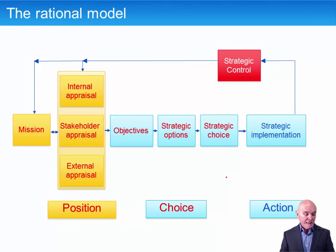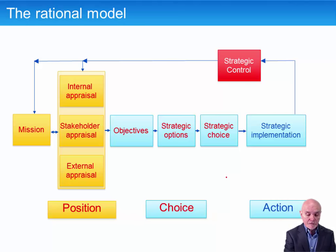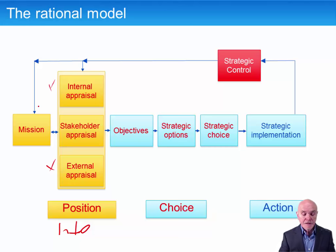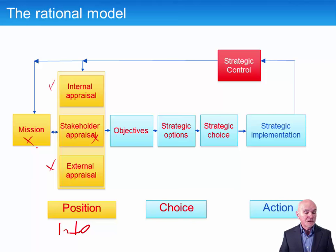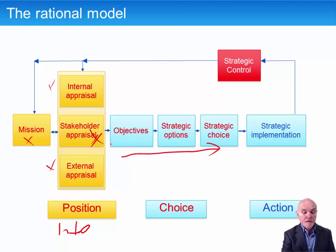This rational planning model is something you would have seen in P3. It divides strategic planning into three phases. First is what's called the strategic position — this is basically gathering information. There is external information, internal information, what your stakeholders want, what you believe you should be doing, what your mission should be, what you think your function is. Based on this information which you've gathered, then you can set objectives and you can make choices. Some choices might be high risk, high return, but some stakeholders might not want that.